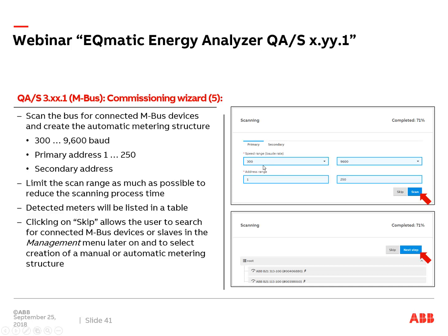Now connected to the Energy Analyzer QAS3 16.1, I log in with my credentials — default is username 'admin' and password 'admin'. After the first login, you are forced to change the password for security. When it's a new device or after factory reset, the commissioning wizard starts and guides you through the steps, including network settings: fixed or dynamic IP address, DHCP server settings, typical IP address, default gateway, and so on.